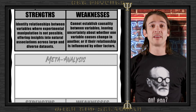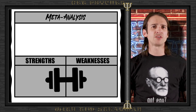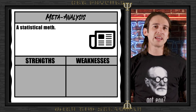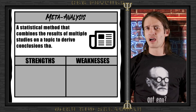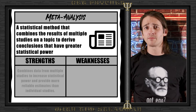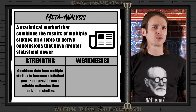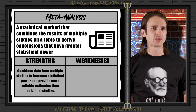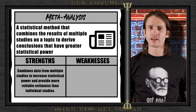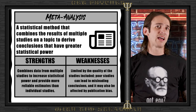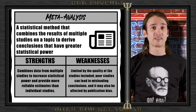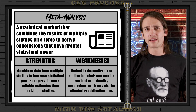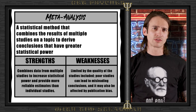Next is the meta-analysis — think of it as the heavyweight champion of literature reviews, taking results from multiple studies to find common findings. This method gives us more statistical power and helps clear up mixed results from different studies. The downside: it's only as good as the studies it analyzes, and poor-quality studies can lead to misleading meta-analysis results.